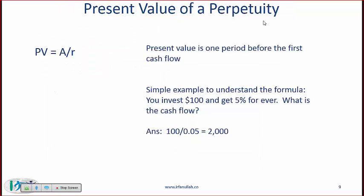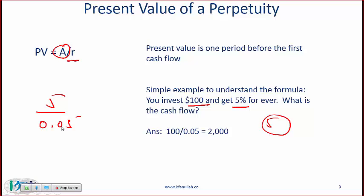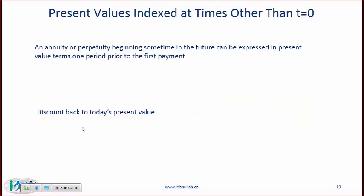The present value of a perpetuity is simply the cash flow divided by the discount rate — no financial calculator function needed, just a regular calculation. For example, if you invest at 5% and receive $5 forever, the present value is $5 divided by 0.05.